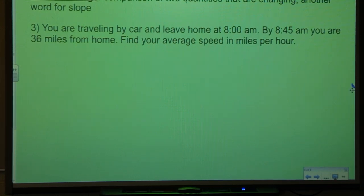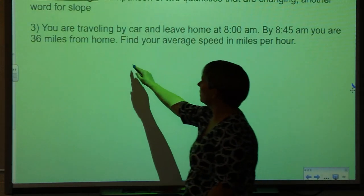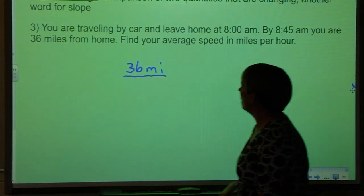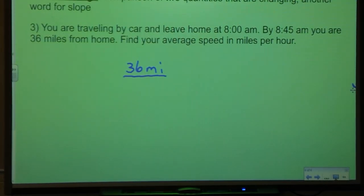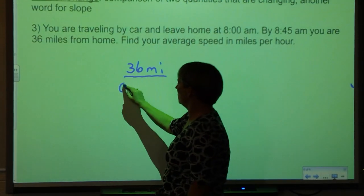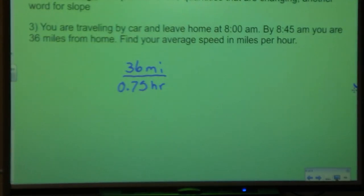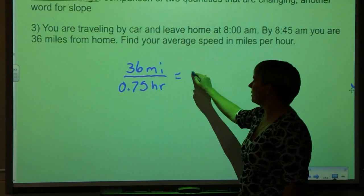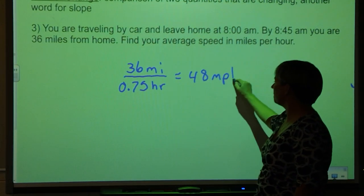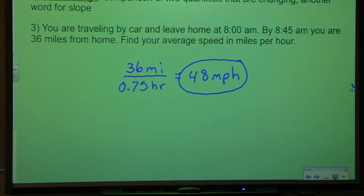So really what I'm looking at here is I have two points. I have a point for starting at home, 8 a.m., and I'm 0 miles from home. And then I have 8:45 a.m., and I'm 36 miles from home. So my rate is going to be 36 miles in 45 minutes. Remember, 45 minutes is 3/4 of an hour. I do need to simplify this. When I simplify this, I end up with 48 miles per hour. 48 miles per hour would be my rate of change.